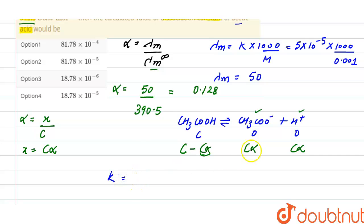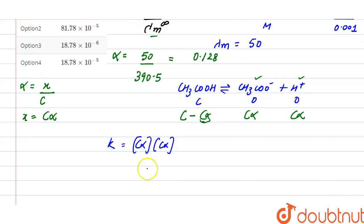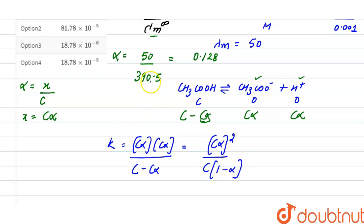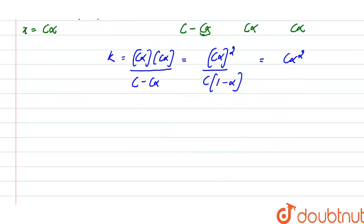The dissociation constant equals the concentration of the products divided by the concentration of the reactant. This gives Ka equals (C·alpha)² divided by C·(1 minus alpha). Since the value of alpha is very small, we can approximate 1 minus alpha as 1. So the dissociation constant simplifies to Ka equals C·alpha².